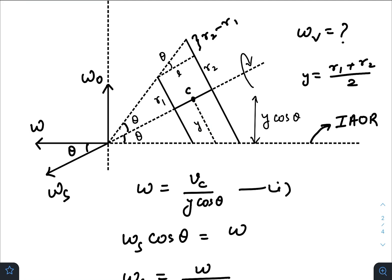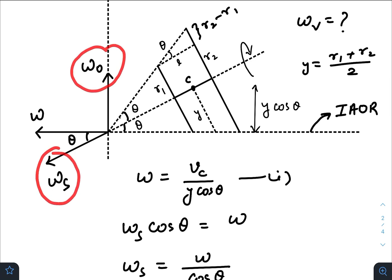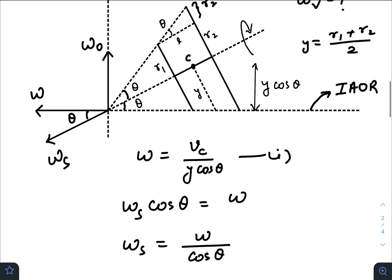So if I have considered this length as y which will be (r₁ + r₂)/2, because the radius is increasing linearly, so here it will be (r₁ + r₂)/2. So this must be y cos θ. So this perpendicular length is y cos θ, so ω is vᴄ divided by y cos θ.